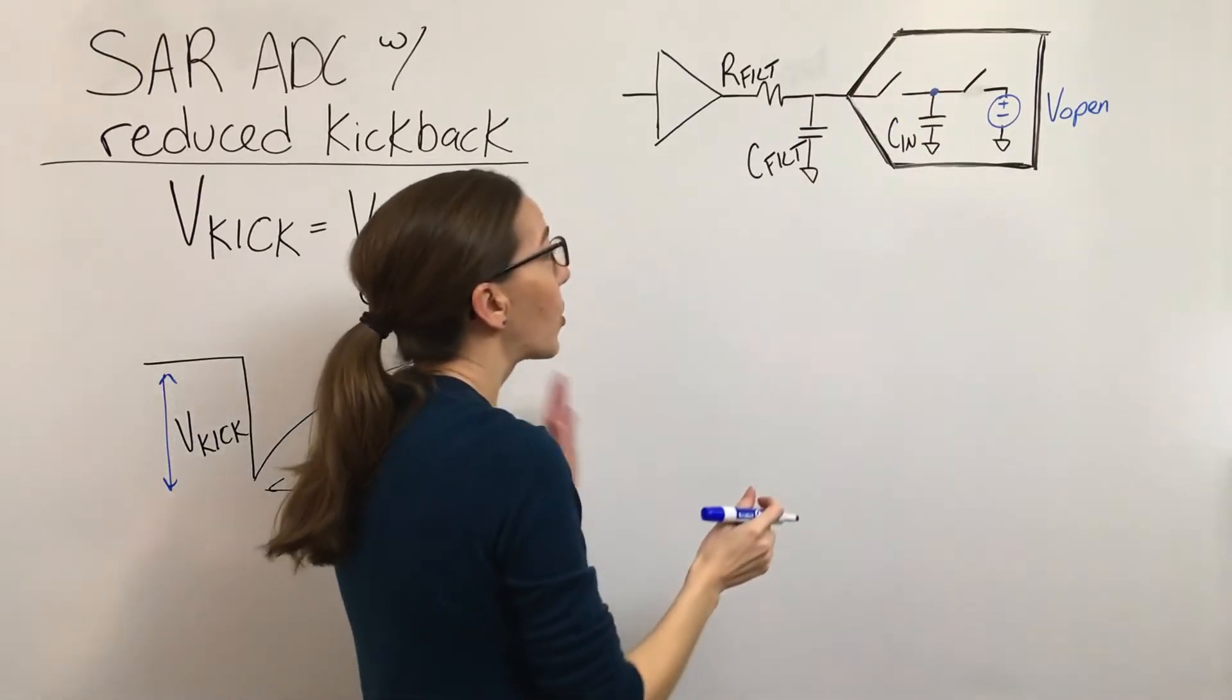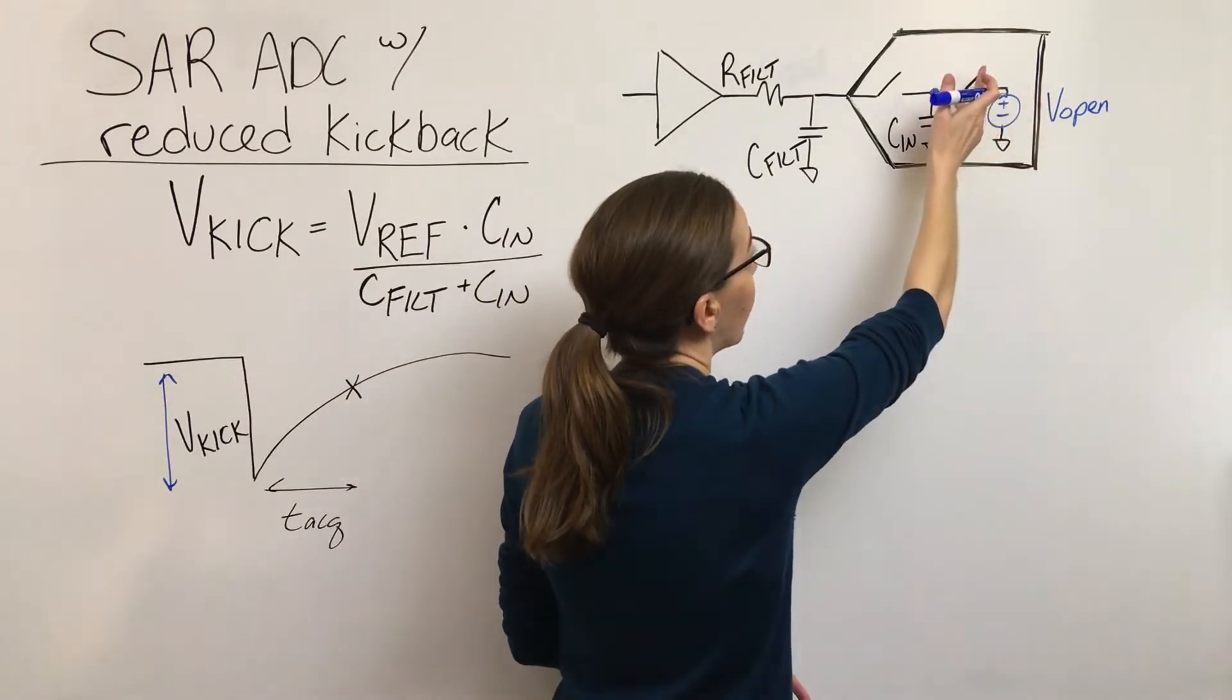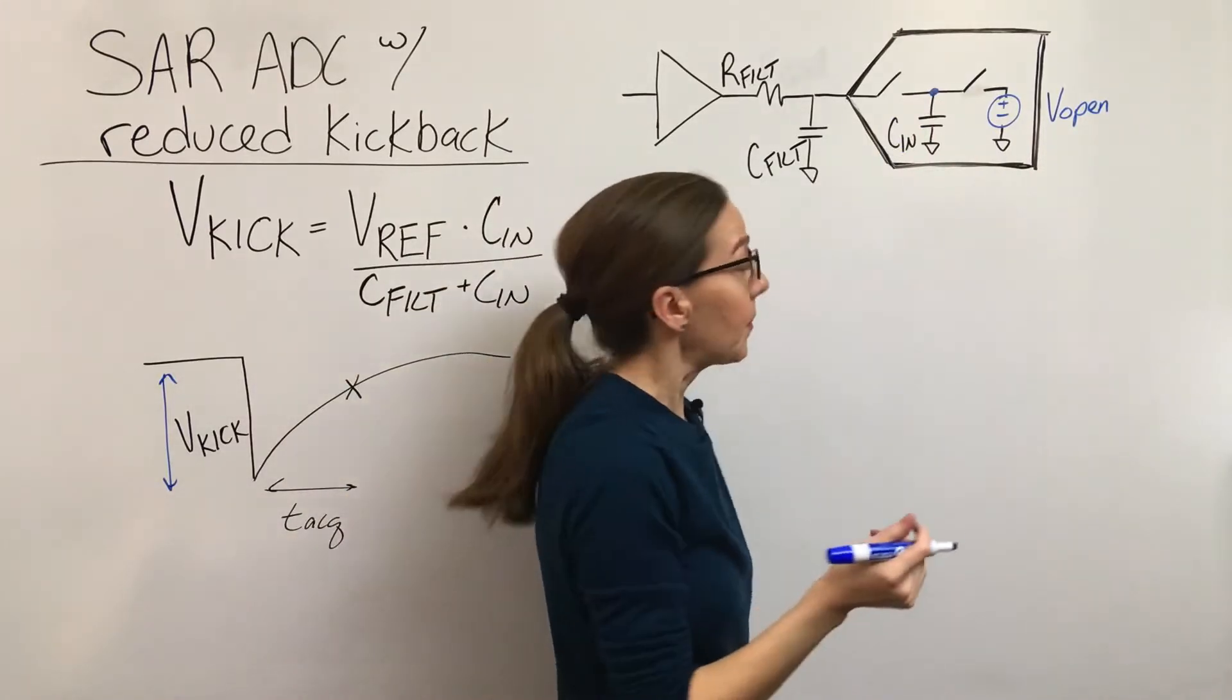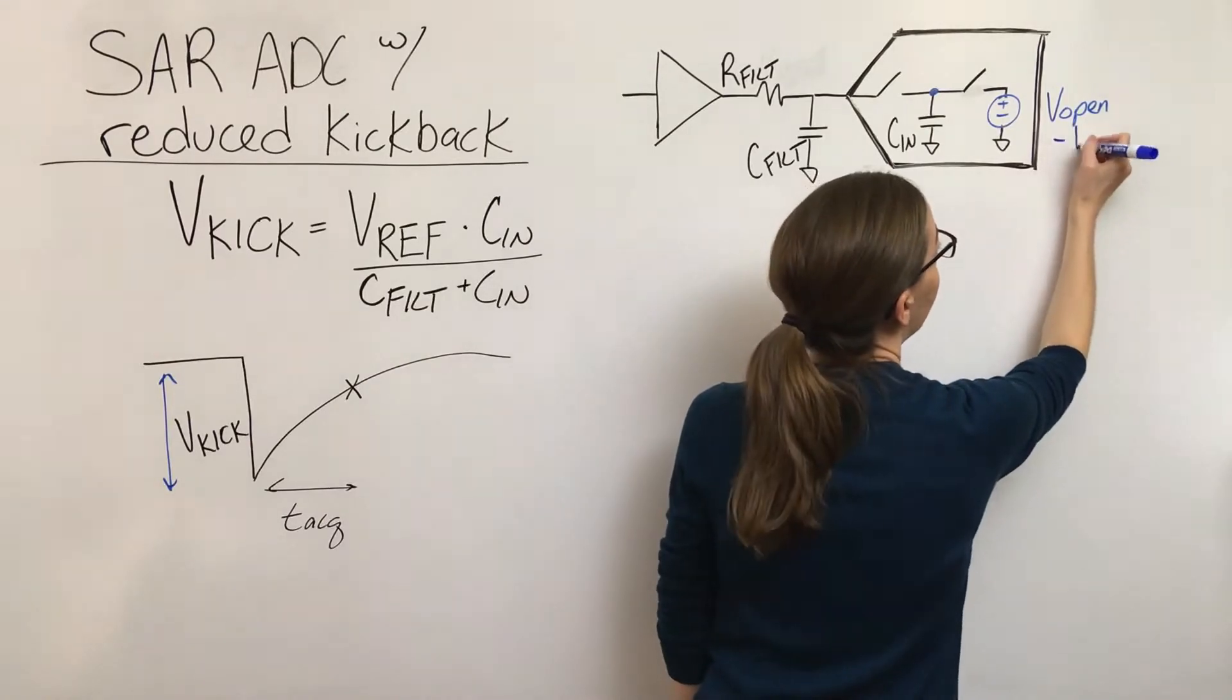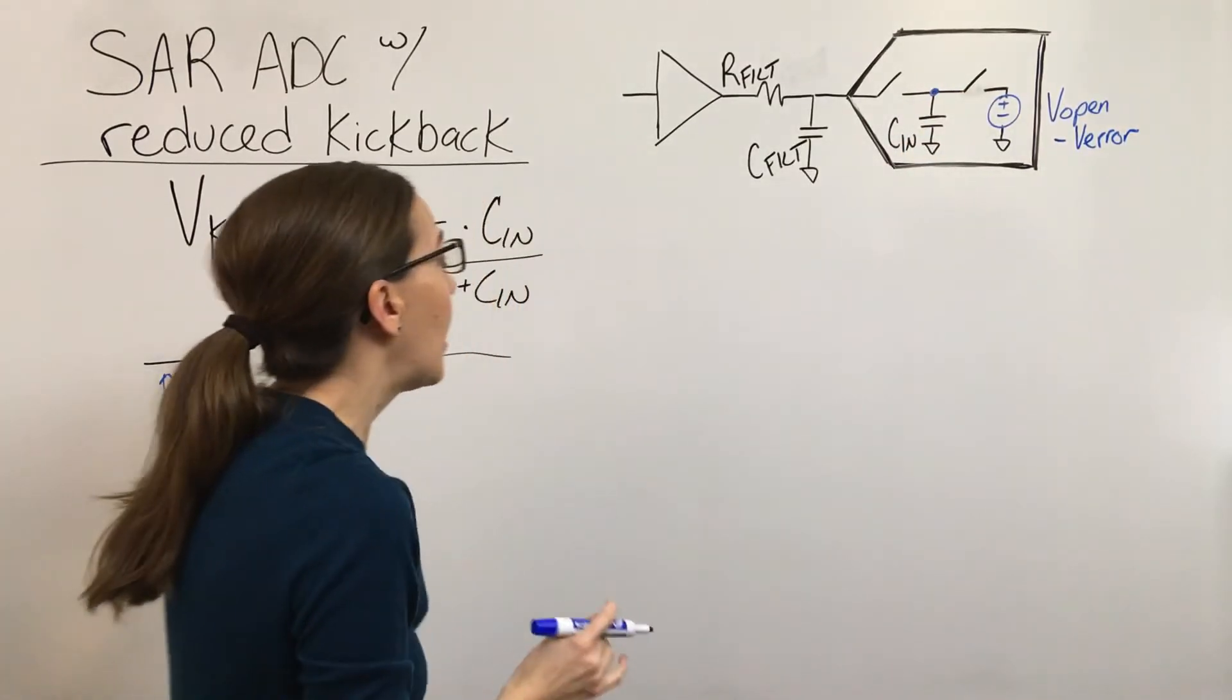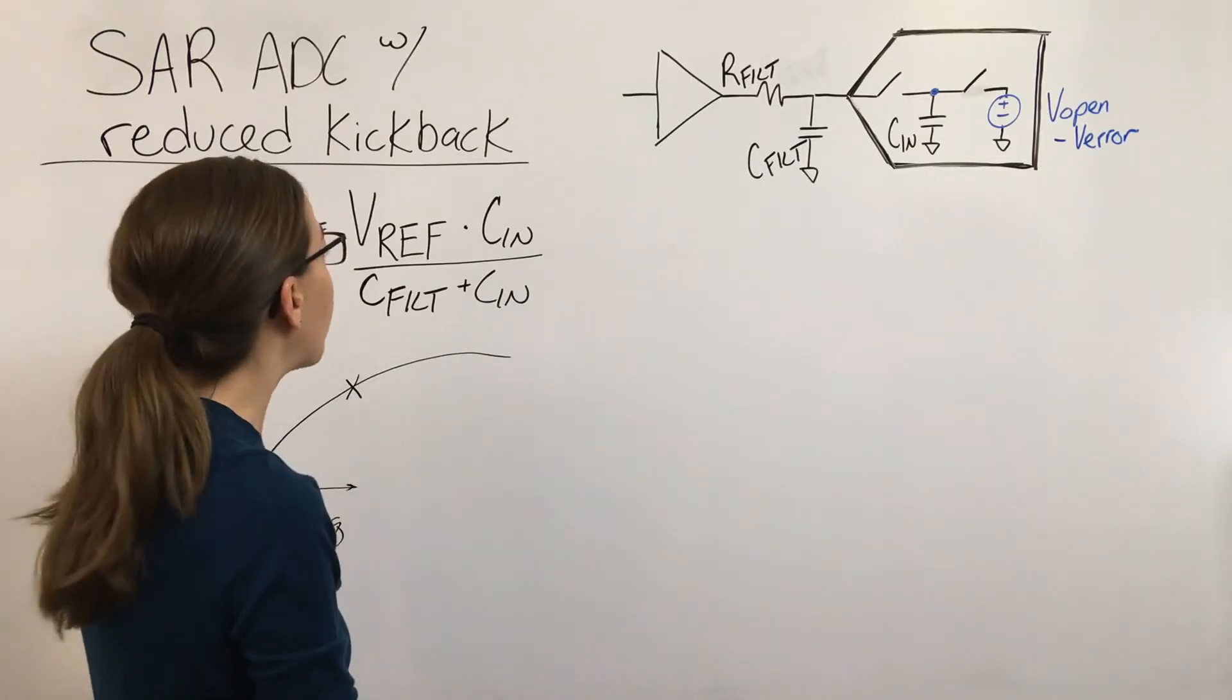And so another thing to understand is even though the circuitry is trying to drive the circuit to that voltage when the switch opened, there is a certain amount of error that occurs in the circuit. So it's never going to be perfect and there will be an error on this voltage as well.